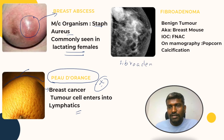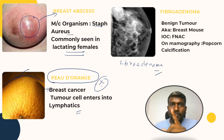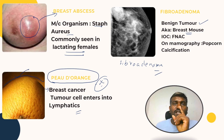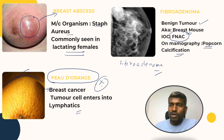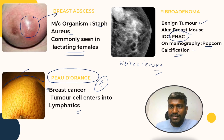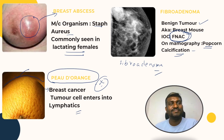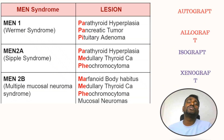The tumor cells actually enter into the lymphatics — remember peau d'orange. This next image is fibroadenoma. Remember four points: it is a benign tumor; it is also called breast mouse; investigation of choice is FNAC; and on mammography we are going to see popcorn calcification.